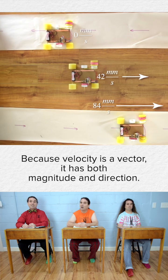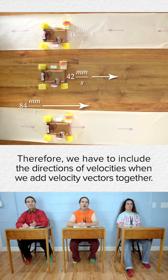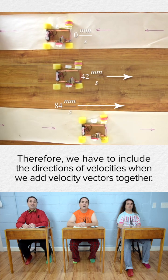Yep, because velocity is a vector. It has both magnitude and direction. Therefore, we have to include the directions of velocities when we add velocity vectors together.